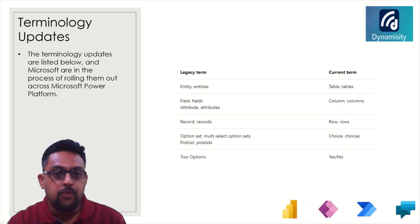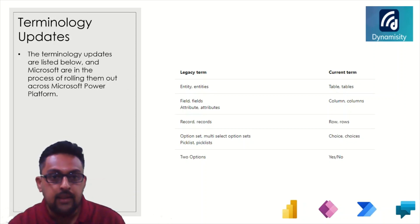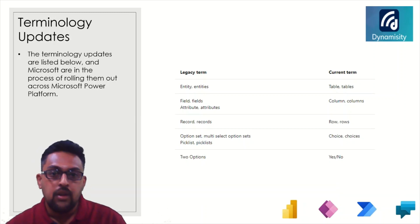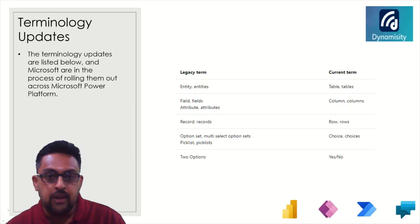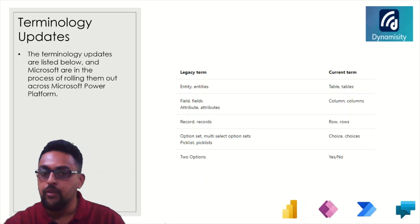Let us talk about terminology updates. Microsoft is in the process of rolling them out across Microsoft Power Platform. Entity or entities will now be referred to as table and tables. Field, attribute, or attributes will be referred to as column and columns. Record or records will be referred to as row or rows. Option set, multi-select option set, and pick list will now all be called choice or choices. Two options will now be called yes or no.